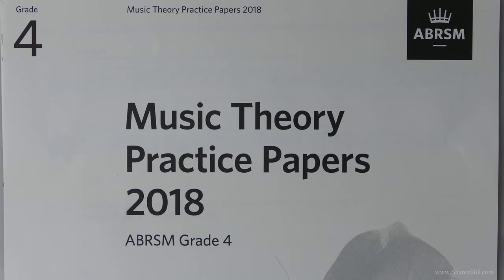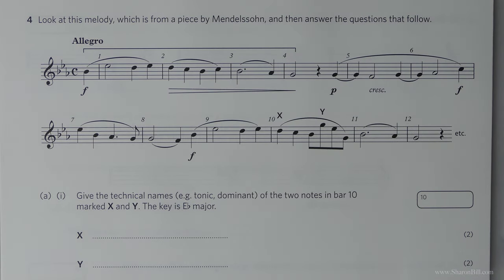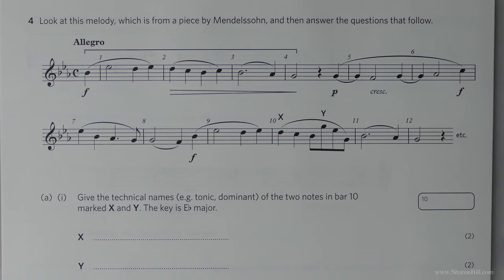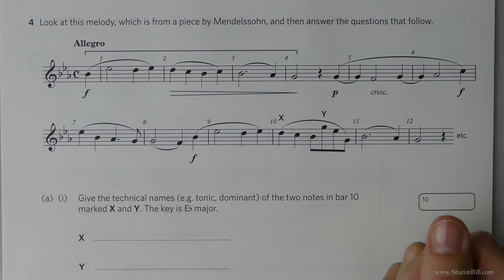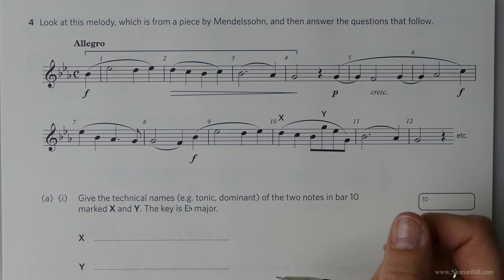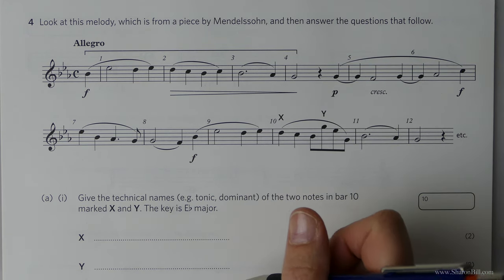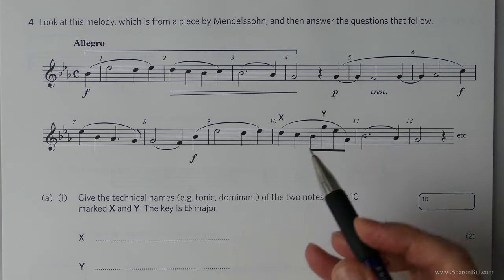Now we're going to continue with question four of the Grade 4 2018 Paper S. If you turn with me to page 24, we can have a look at this together. Have a go at this on your own first. It doesn't matter if you go wrong. It's just better to learn that way instead of passively copying it through. Now, hoping that you've had a go, we'll check through this together. All of the questions here will be referring back to this little extract, a nice bit of Mendelssohn.